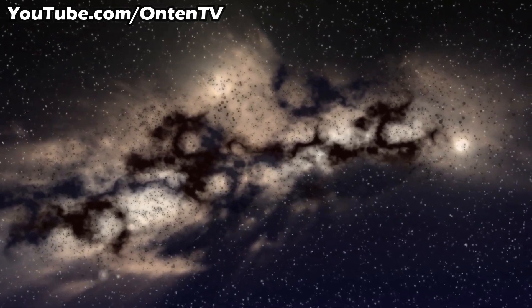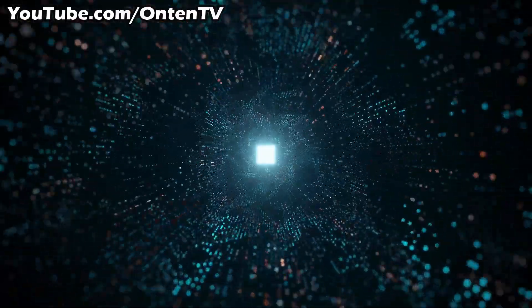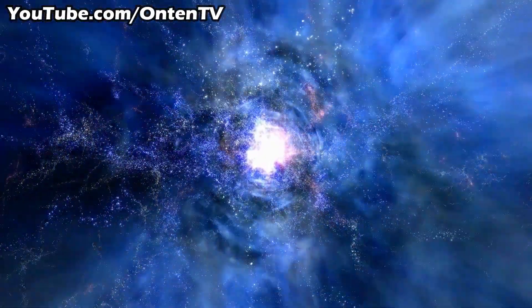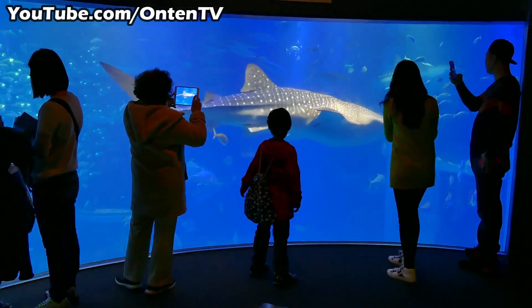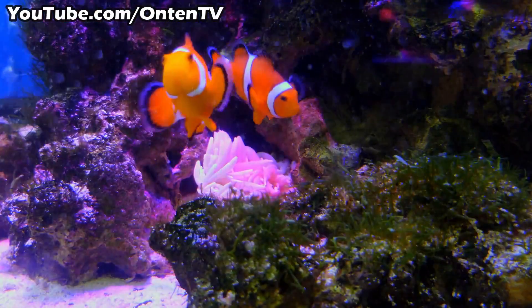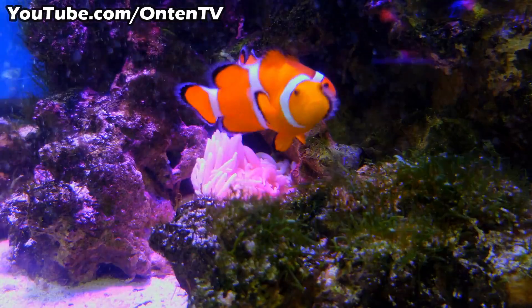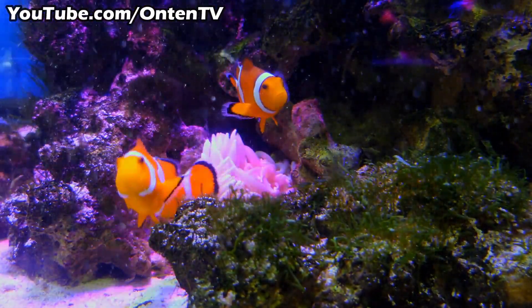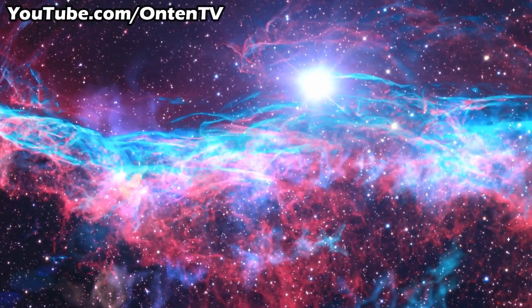Astronomers believe that without dark matter, galaxies and stars would not be together. They give an example: when you look at an aquarium, you see fishes and other creatures swimming in the water. So if you take that water away, the fish can no longer swim or stay afloat. Like that, you can kind of look at the water in the aquarium like dark matter in the universe, and the galaxies are like the fishes where they're floating along and moving along.